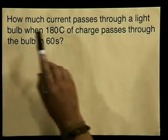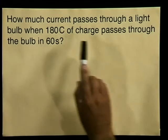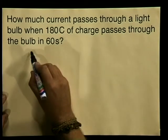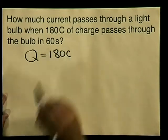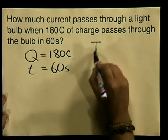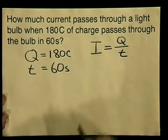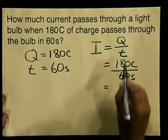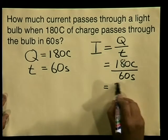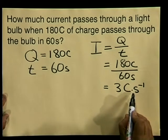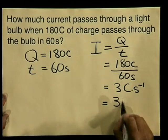Let's use this formula in a calculation. How much current passes through a light bulb when 180 coulombs of charge passes through the bulb in 60 seconds? First, write down the important values: Q is 180 coulombs, and T is 60 seconds. Using the equation I equals Q divided by T, substituting in gives 180 coulombs divided by 60 seconds, which equals 3 coulombs per second. Since coulombs per second is the unit of current — the same as the ampere — the answer is 3 amperes.